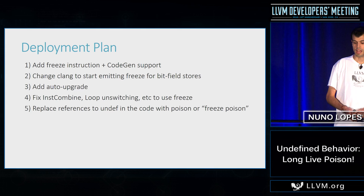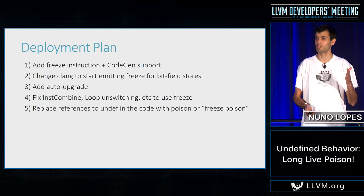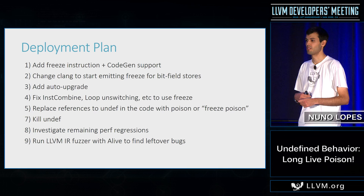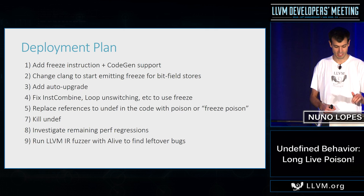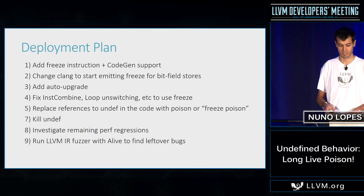Then replace all uses of undef with poison. In some cases you will need freeze of poison, but most cases poison alone will be sufficient to replace all undefs. Finally, just kill undef entirely — and fix regressions. We should also run IR fuzzing tools: Alive has a special mode where we can check whether an optimization is run correctly or not. It has limitations, but we can find bugs with these tools and gain confidence that LLVM is finally correct.